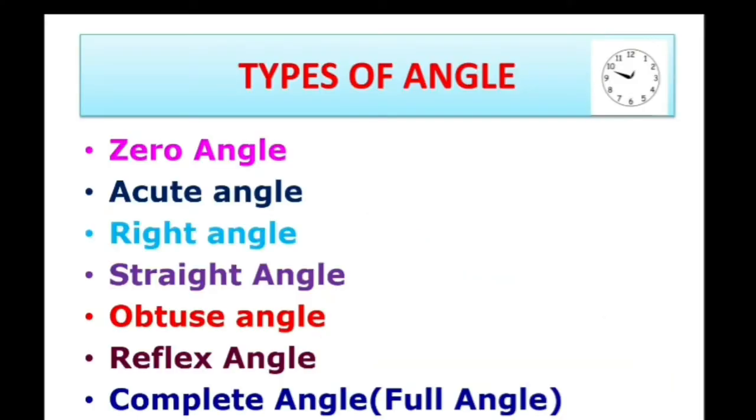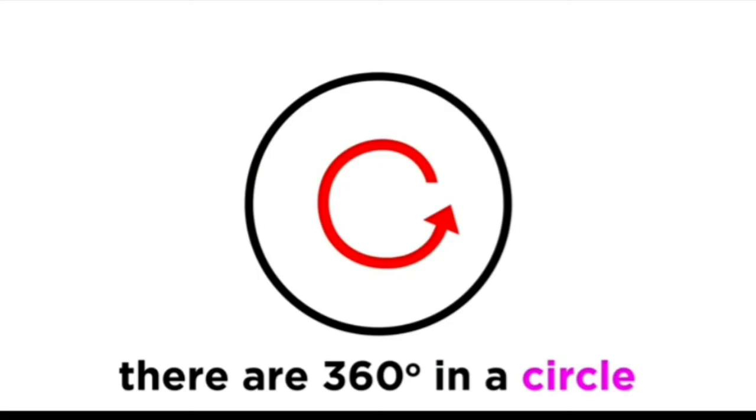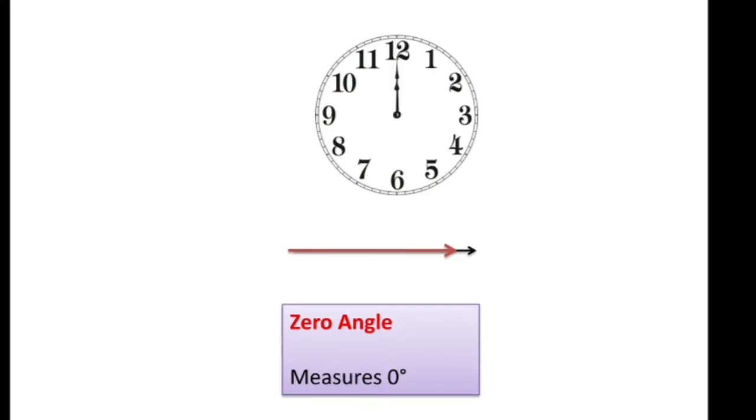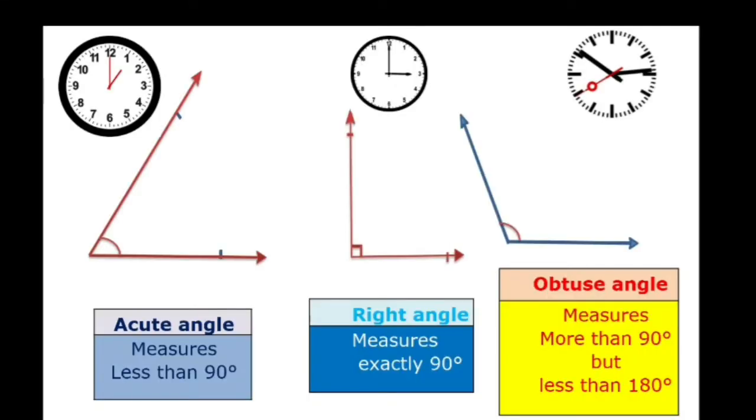To understand the types of angles, we just need to understand one simple diagram. We know these rays rotate completely once they cover 360 degrees. All the different angles which lie between 0 degrees and 360 degrees are classified into types. I am sure you must have understood types of angles.